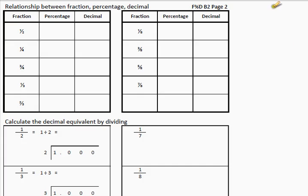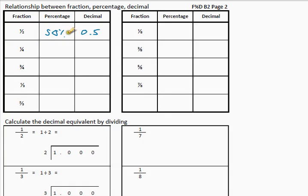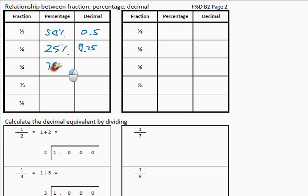Now we're going to look at fraction, percentage, and decimal equivalents — those ones I want you to remember, as they will help you so much. Would you know what is a half as a percentage? 50% and 0.5. Would you know what is a quarter? That is half of a half — half of 50% is 25%, which is 0.25. Now, 3 quarters is going to be 3 times 25, which is 75%, which is 0.75.